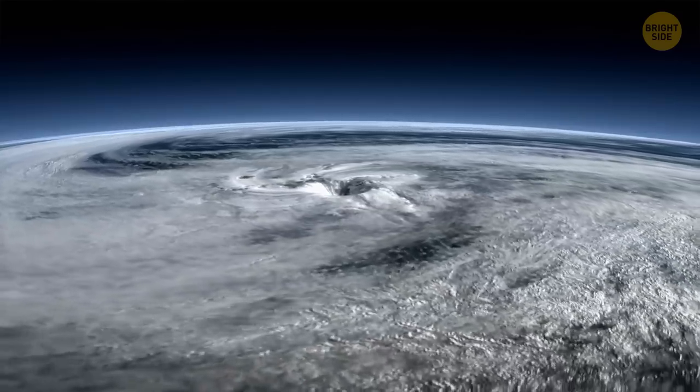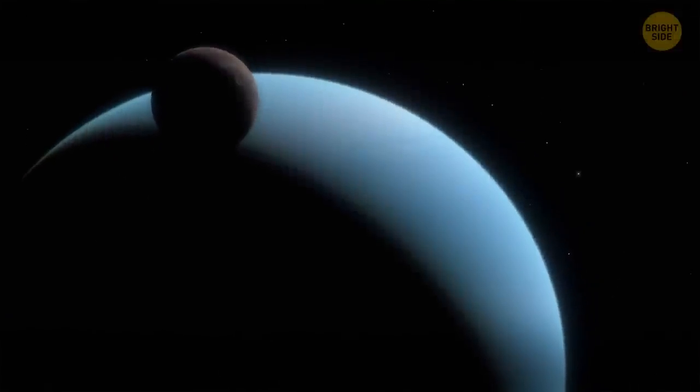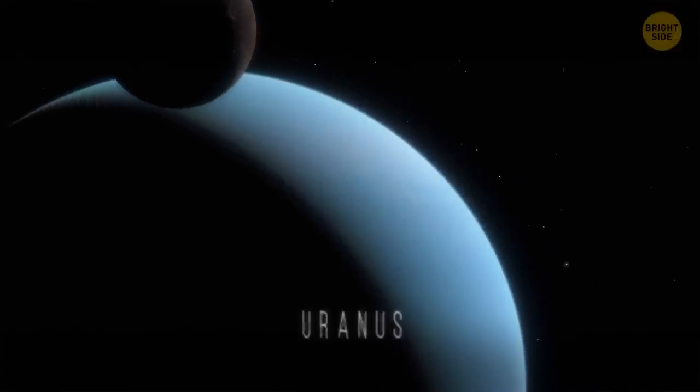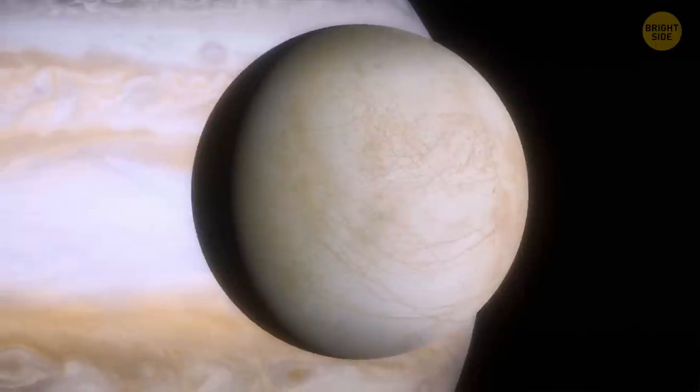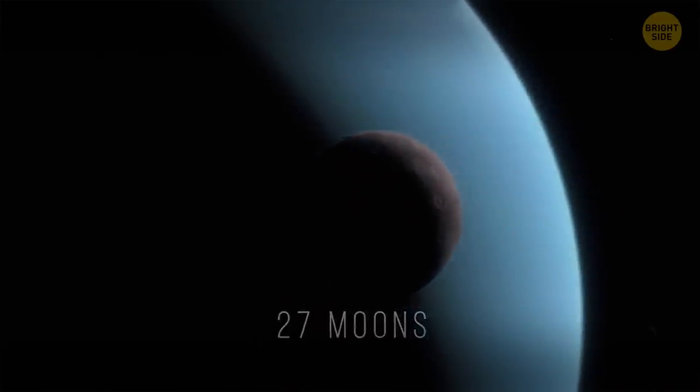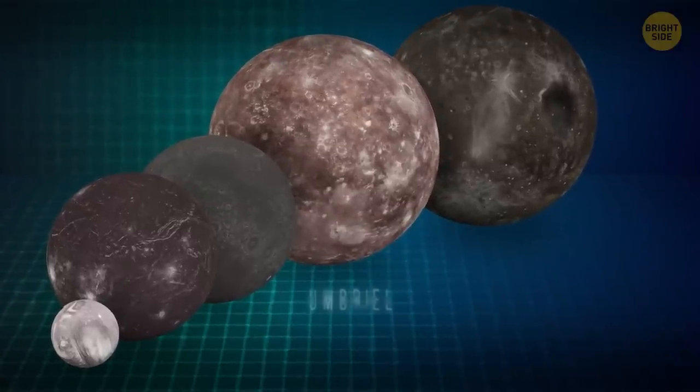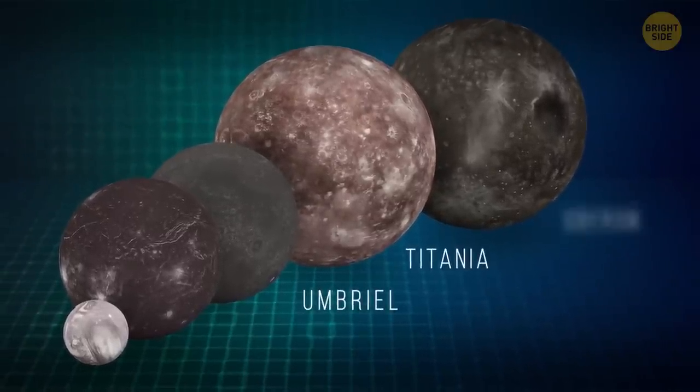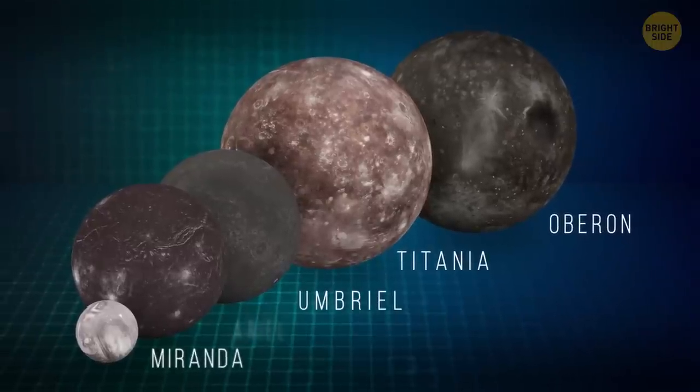It's possible there are oceans hidden under the surface of the moons surrounding Uranus. Scientists have also been investigating the oceans on Jupiter's moon Europa and Saturn's moon Enceladus. These oceans are hidden below the moon's icy crusts. Uranus has 27 moons. Five of them are especially big. Those are Umbriel, Titania, Oberon, Miranda, and Ariel.